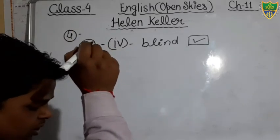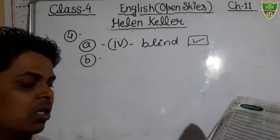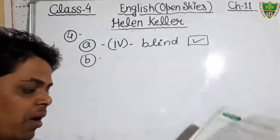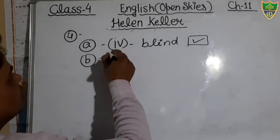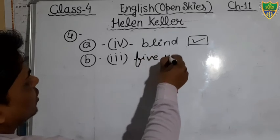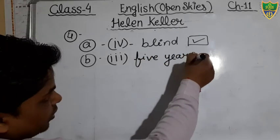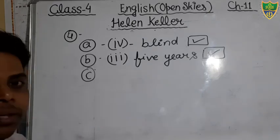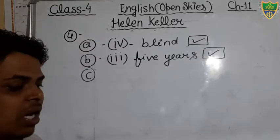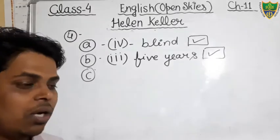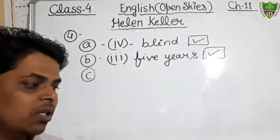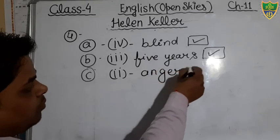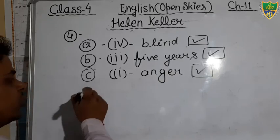Question B: 'The little girl lived in the silent world for blank.' The options are 3 years, 4 years, 5 years, and 6 years. Option number 3 — 5 years — is the correct option. Question C on page 96: 'Helen often shouted and cried due to blank.' The options are blindness, anger, deafness, and dumbness. Option number 2, 'anger,' is the correct option because she was unable to understand the people.